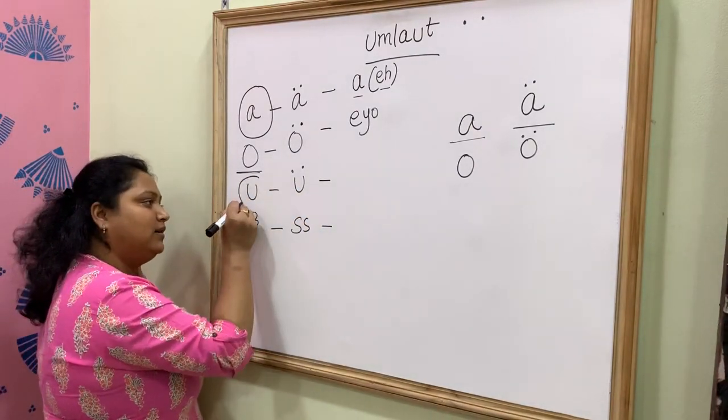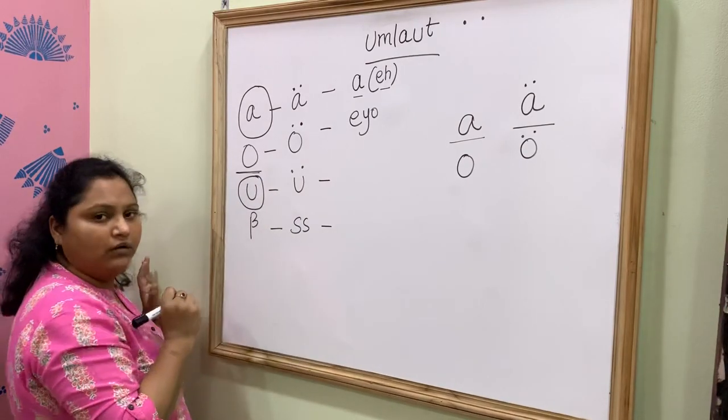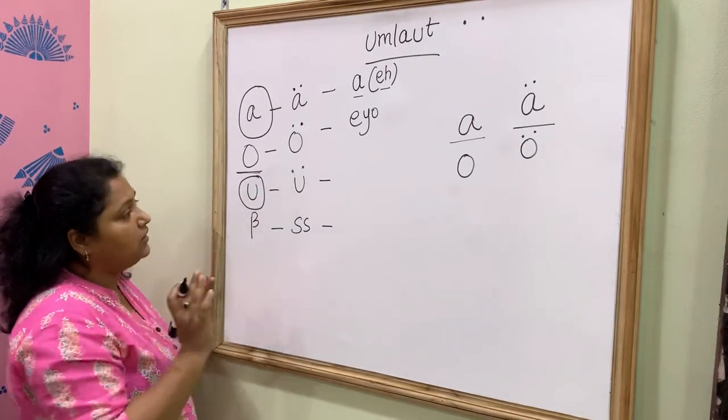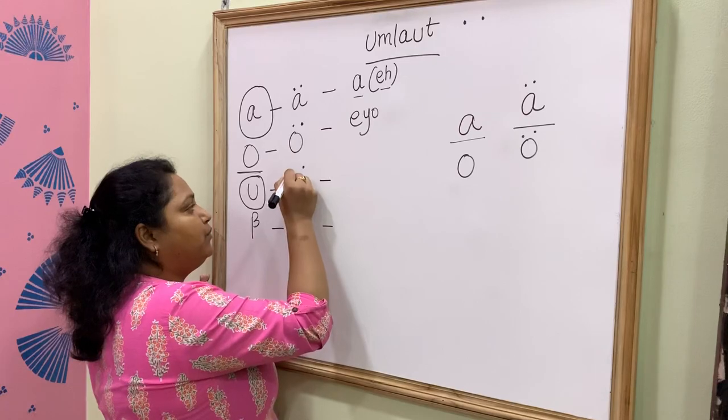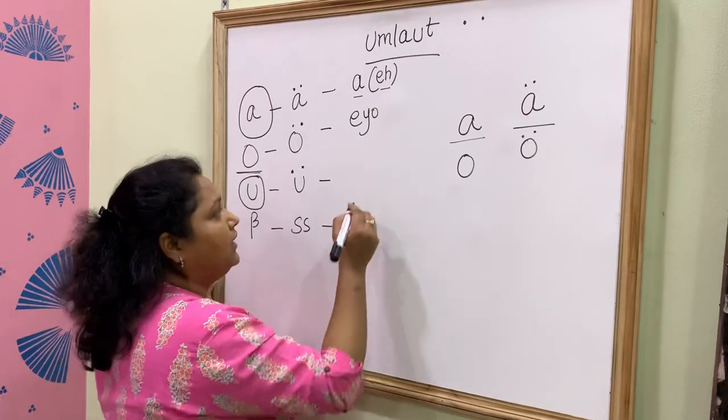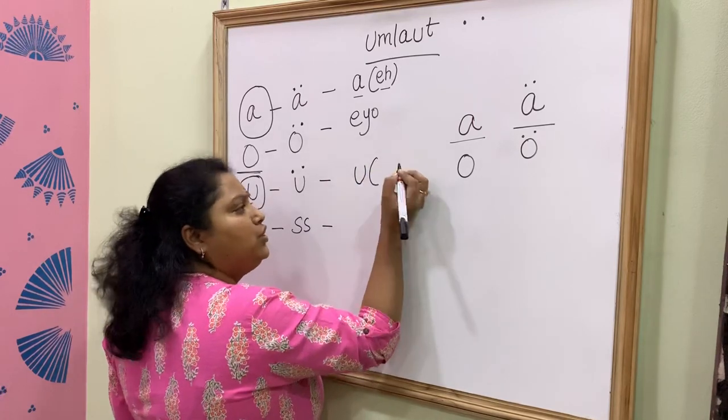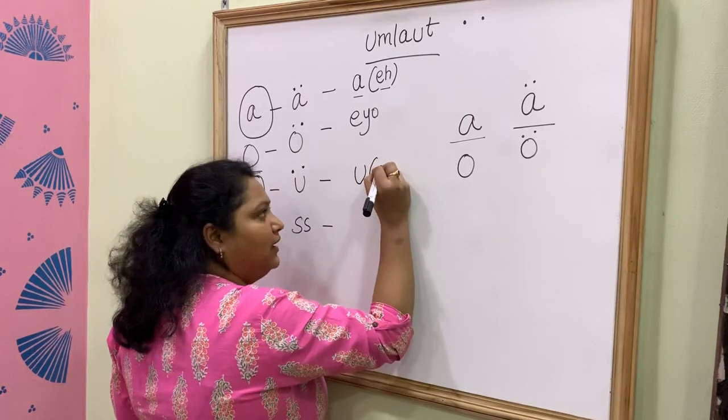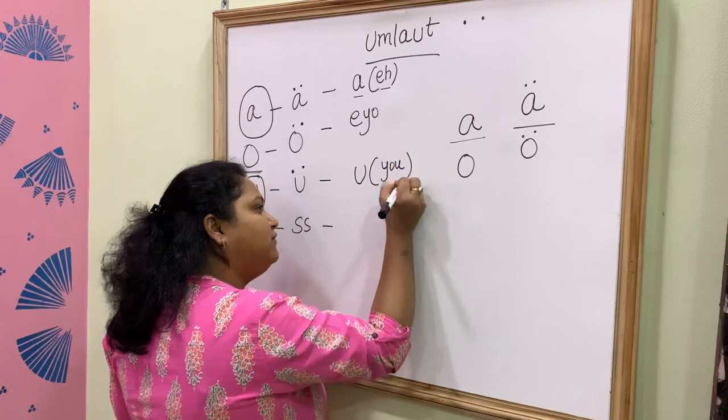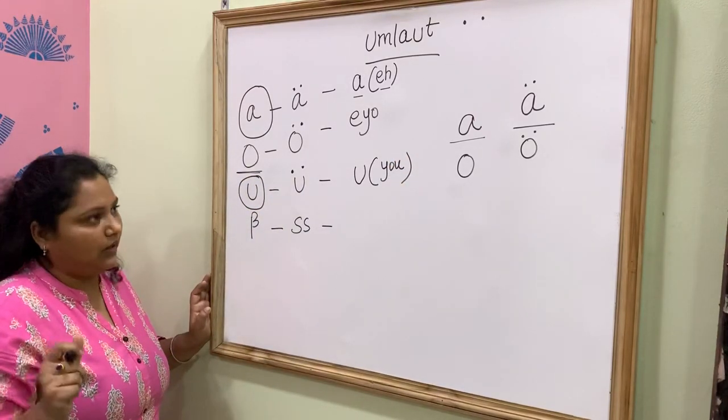This is U in German language. But the moment you put Umlaut, it becomes U, the normal U in English.